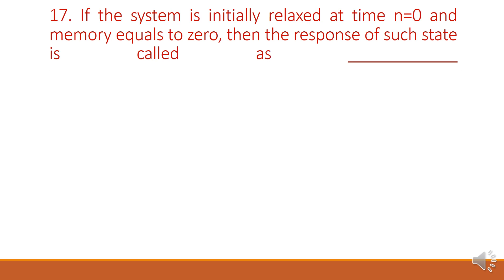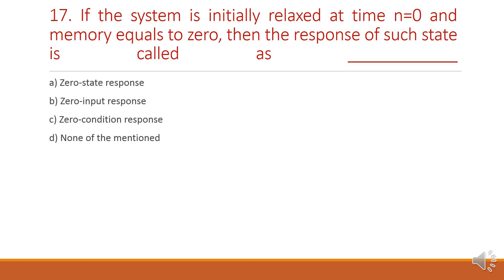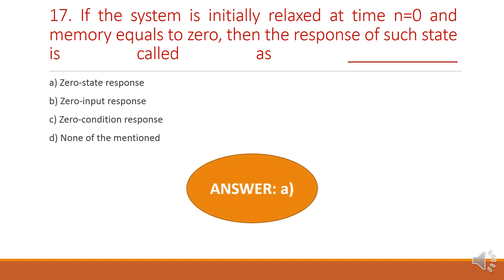Next question: if the system is initially relaxed at time n equals 0 and memory equals 0, then the response of such a state is called — option A: zero-state response, option B: zero-input response, option C: zero-condition response, option D: none of the above. The answer is option A, zero-state response.